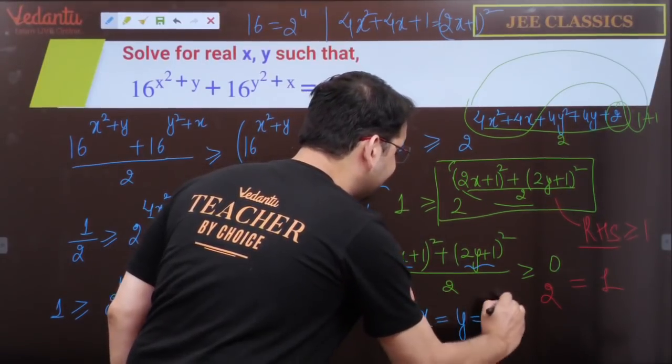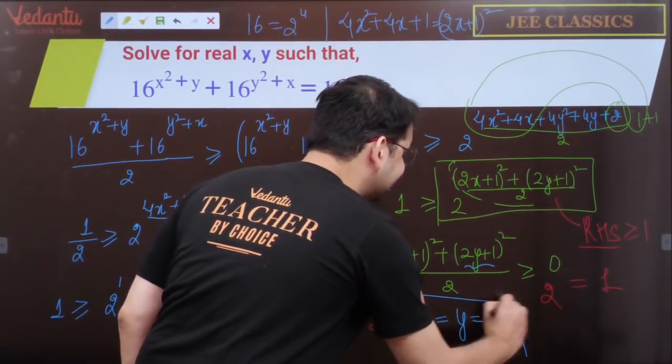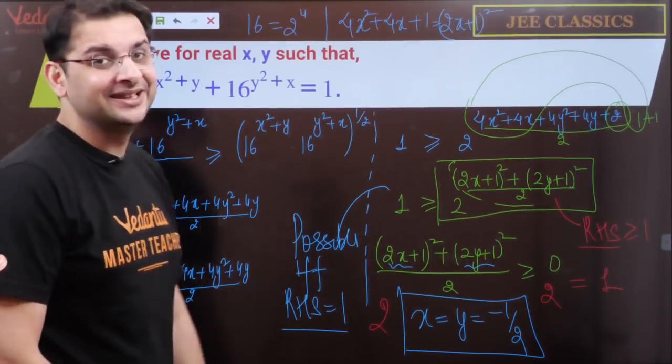Clearly, x and y are -1/2. So x = -1/2, y = -1/2 is the real solution.